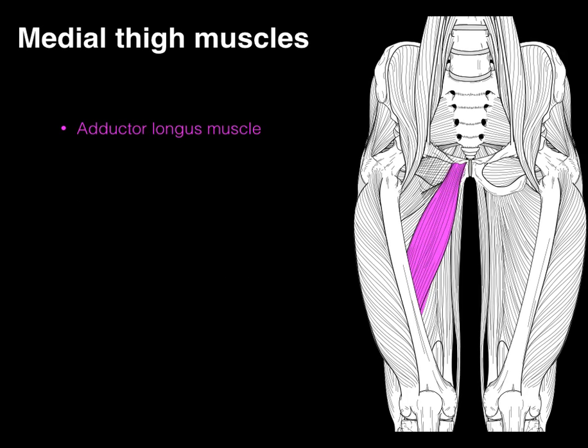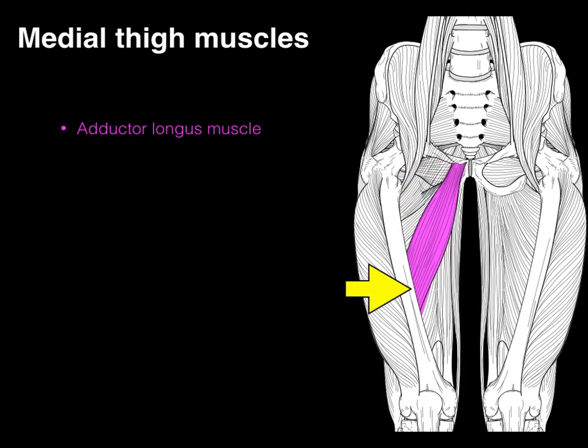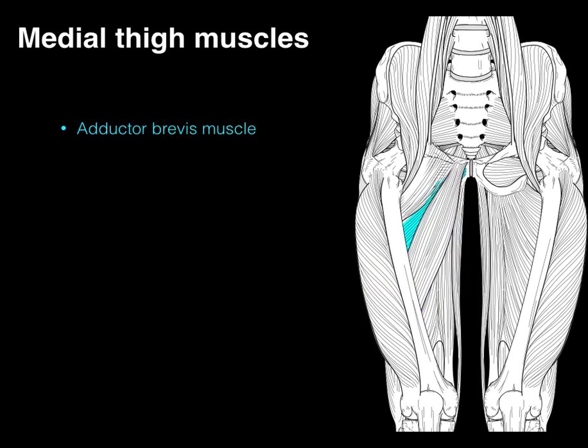First, the adductor longus. It gets its name because out of the three adductors, it seems to be long — hence the name. It arises from the pubic bone and then courses at an oblique angle down to attach on the back of the femur on the linea aspera. There's our adductor longus.